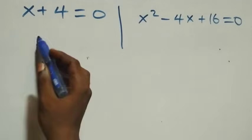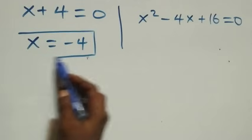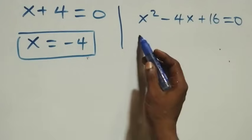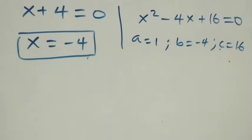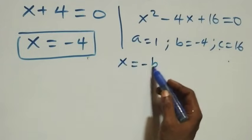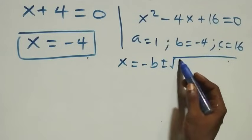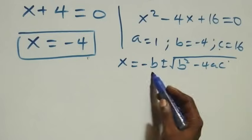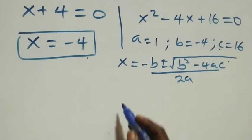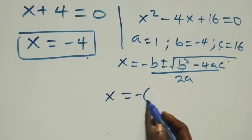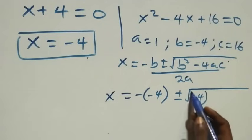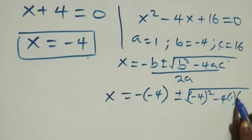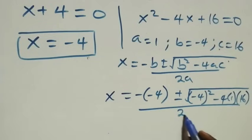From x + 4 = 0, we get x equals negative 4, which is a real solution. For the quadratic x² − 4x + 16 = 0, we identify a equals 1, b equals negative 4, and c equals 16. Applying the quadratic formula: x equals (4 ± √(16 − 4 × 1 × 16)) over 2.